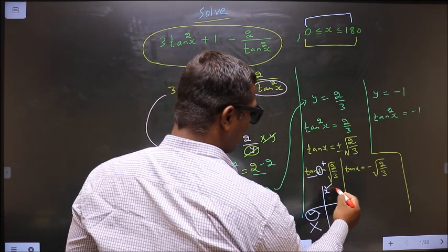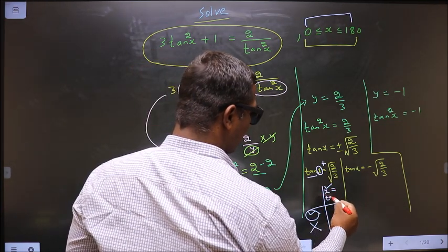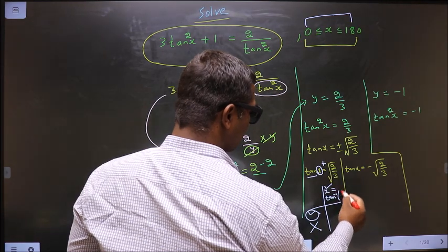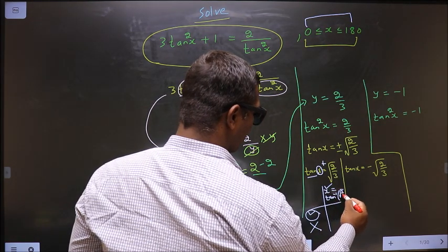And how do we find the angle in the first quadrant directly? Tan inverse square root 2 by 3.